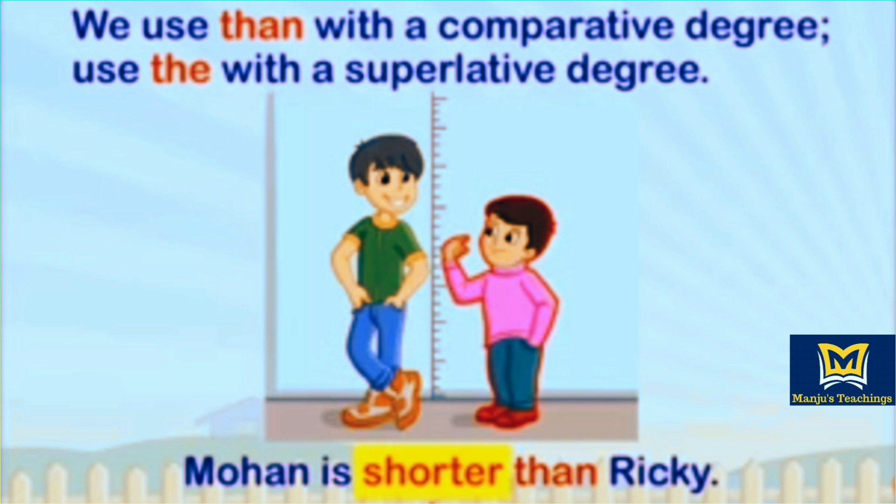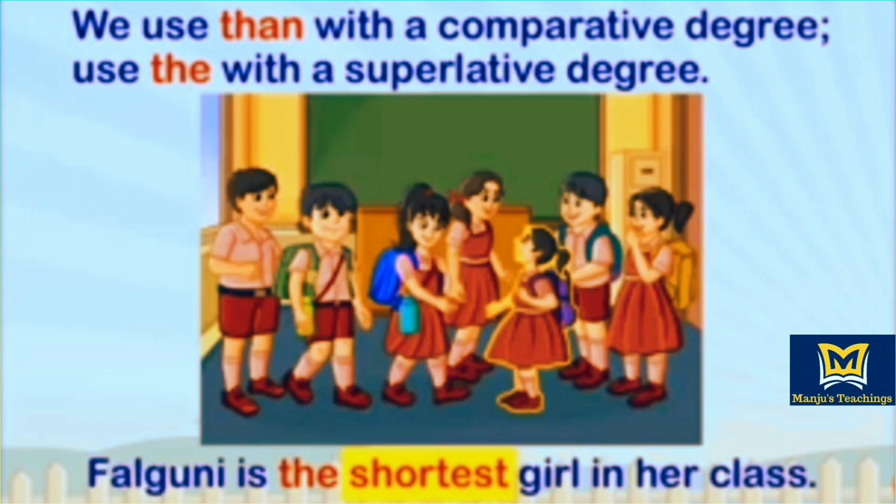We use 'than' with a comparative degree. Example: Mohan is shorter than Ricky. And we use 'the' with a superlative degree. Example: Falguni is the shortest girl in her class.